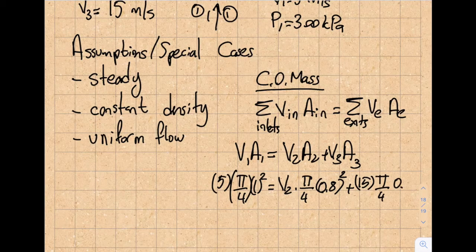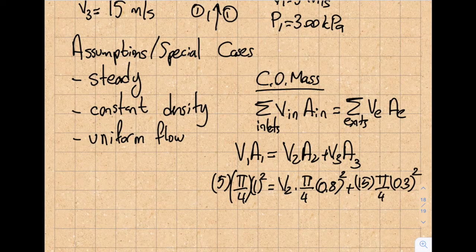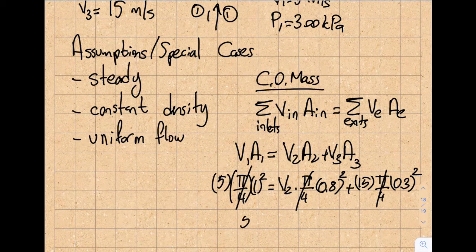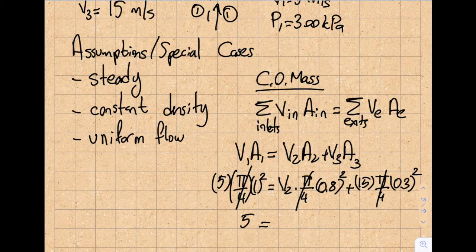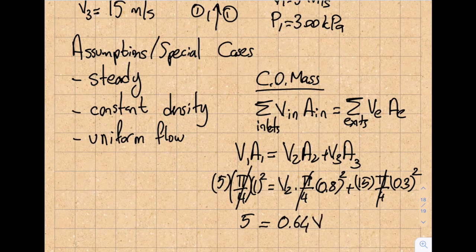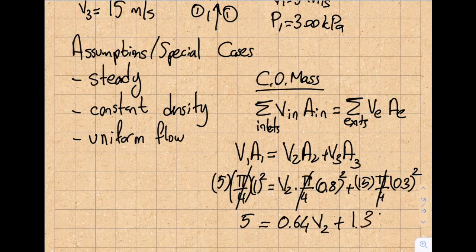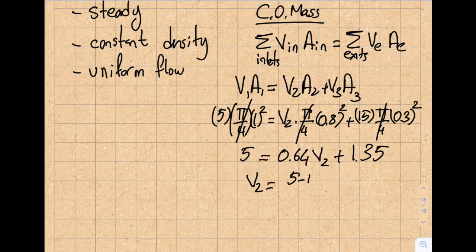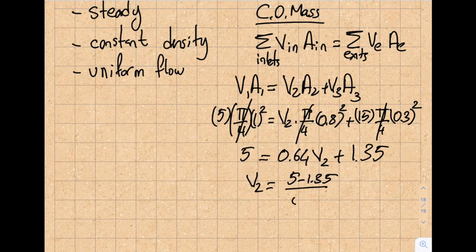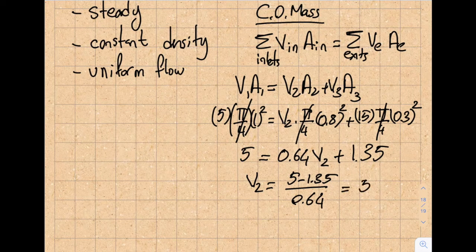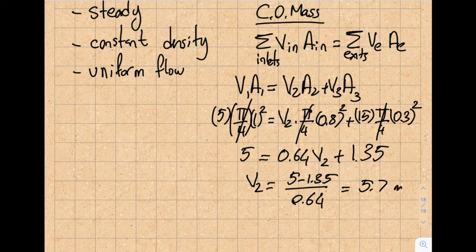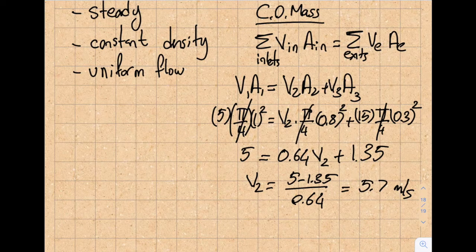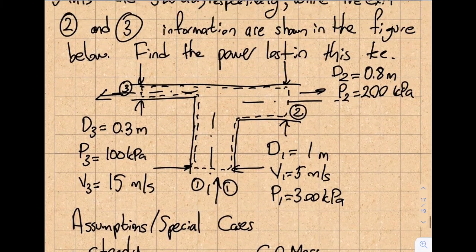I can cancel out the π/4. This becomes 5 equals 0.64·v2 plus 1.35. So v2 will equal (5 minus 1.35) divided by 0.64, and when I do my math I obtain 5.7 meters per second. Now I know all my velocities, and I'm going to look ahead to see what I'm being asked—the question asks me to find the power loss in this T.